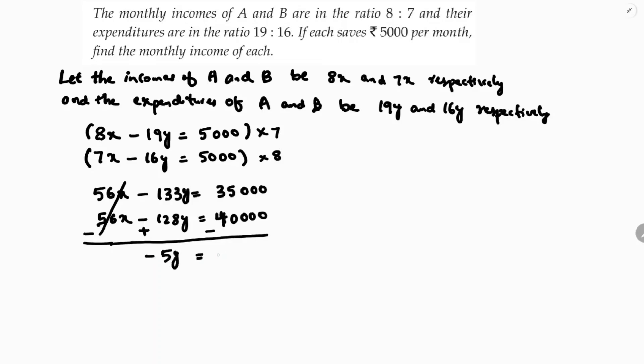133 minus 128, so it's minus 5y. Minus 5y equals minus 5000. So minus minus cancel, so y equals 5000 by 5 which is nothing but 1000.